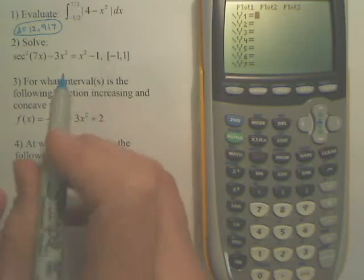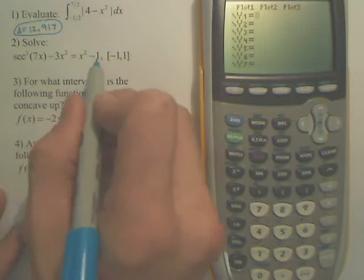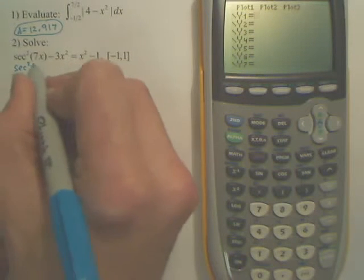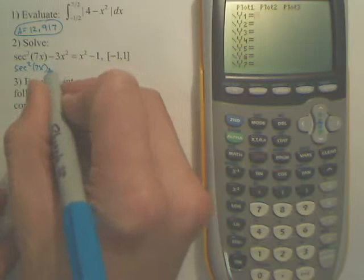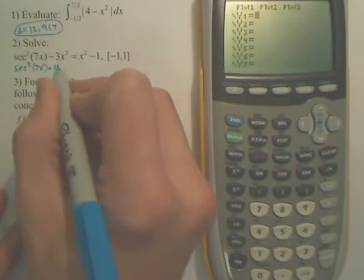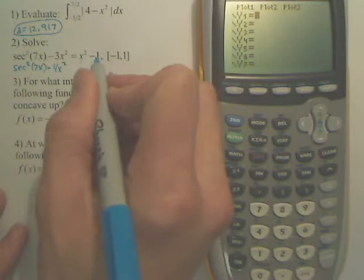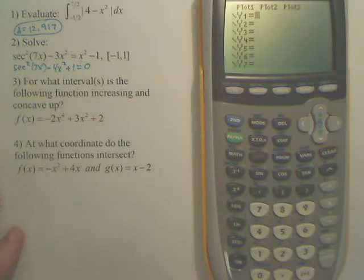So my interval is from negative one to one. Basically you subtract these two things over and you end up with secant squared 7x minus, when you minus this over, you minus 4x squared, and when you add that over, you get plus one equals zero.